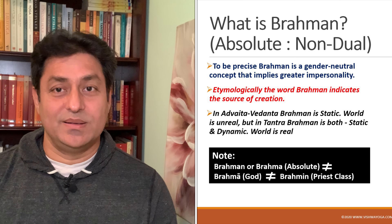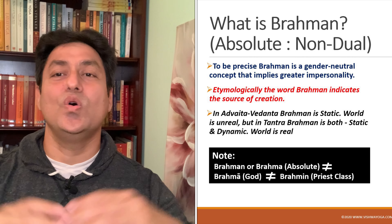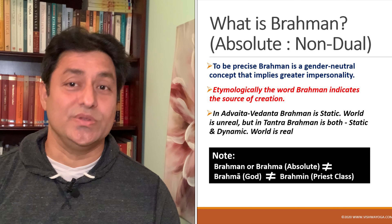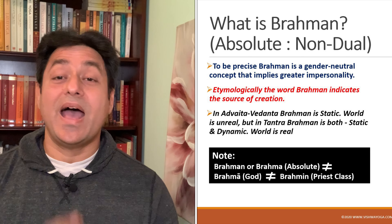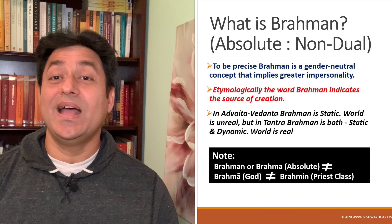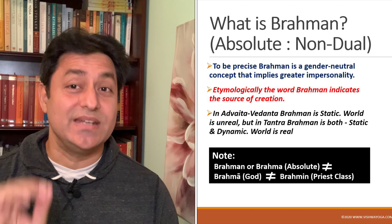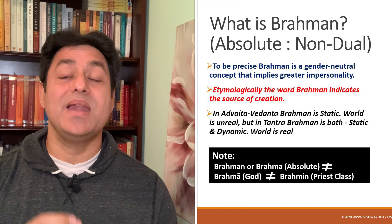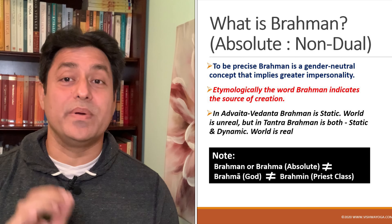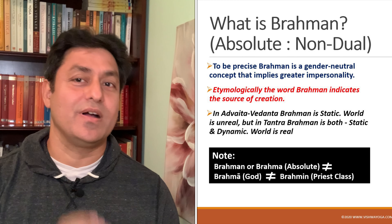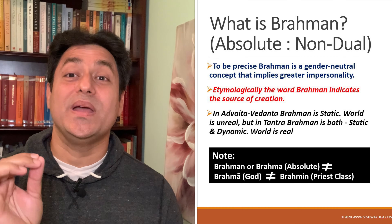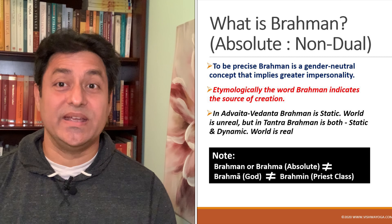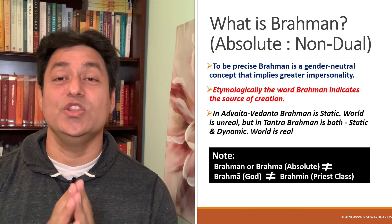In Advaita Vedanta, Brahman is static and the whole world is unreal. In Tantra, Brahman is both static and dynamic and the world is real. I must point out that there is a difference between Brahman or Brahma, Brahma, and Brahmin. Brahman or Brahma is the absolute. Brahma is one of the manifested Gods, part of the Trinity. And Brahmin is referred to the priest class in Hindu society.